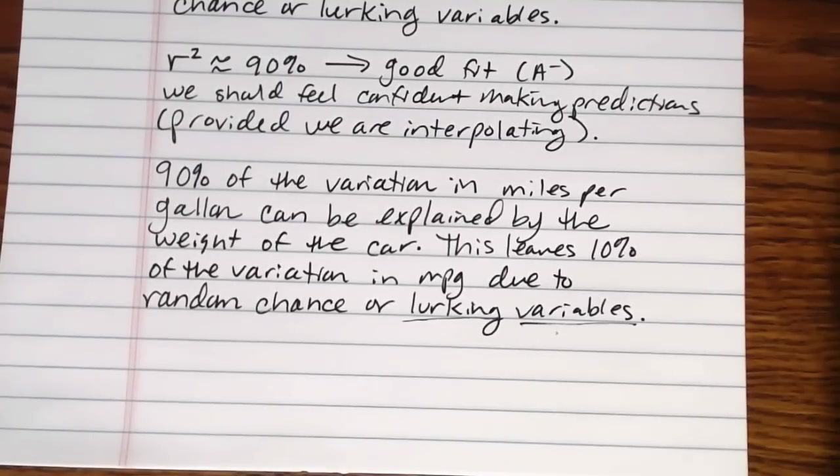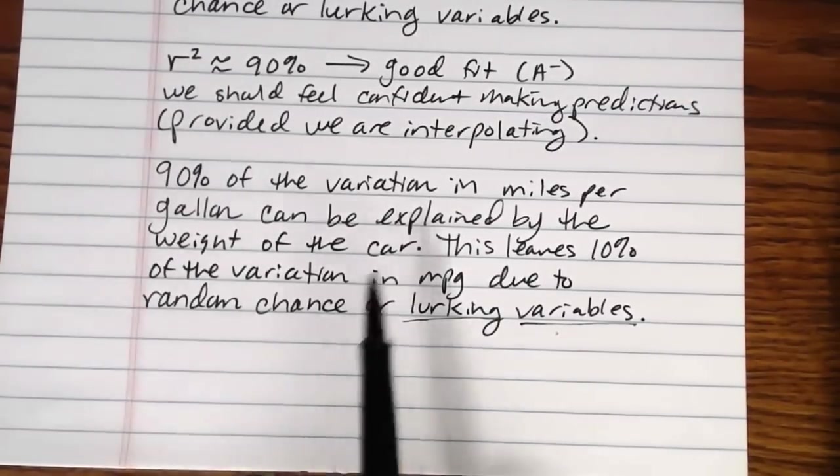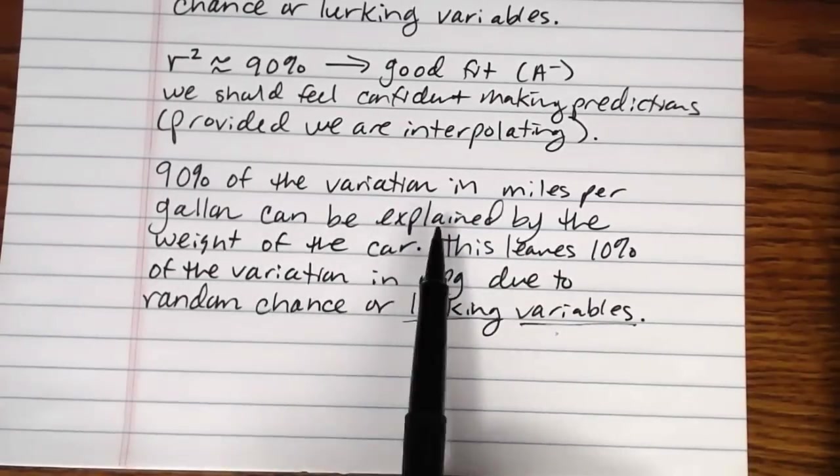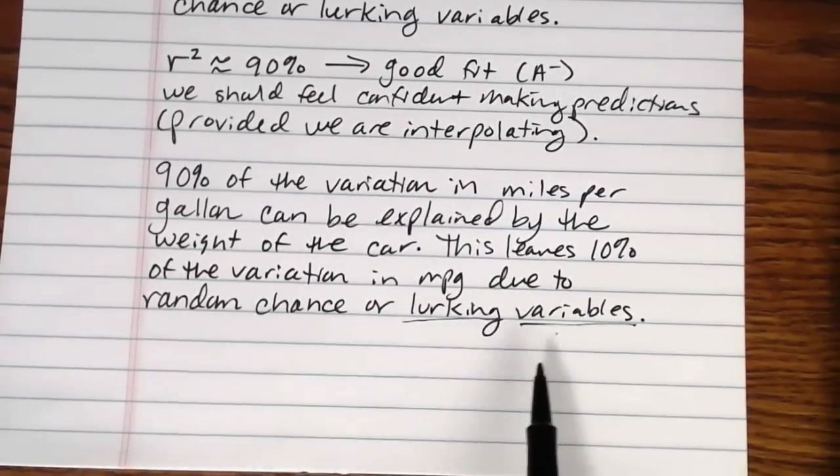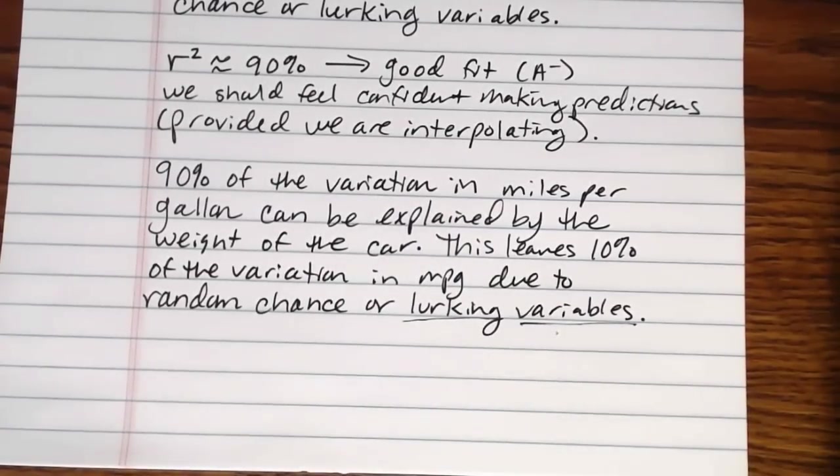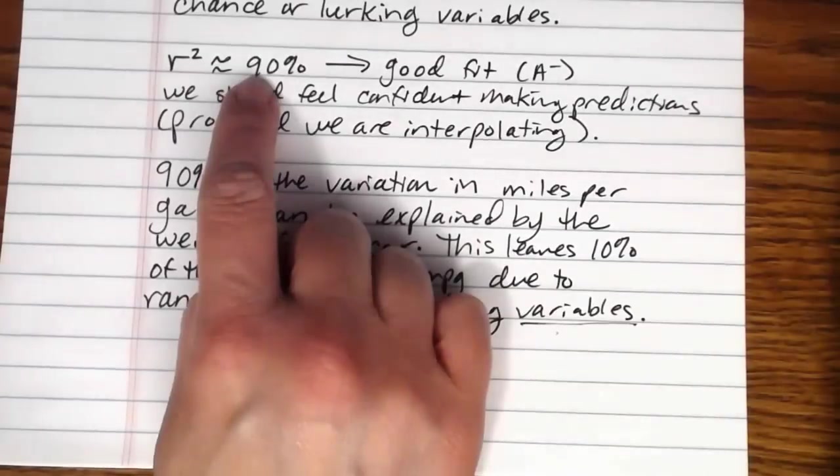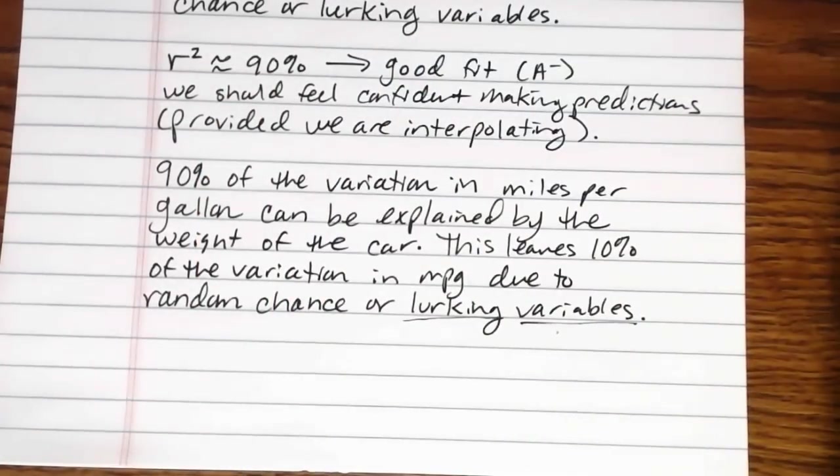And that's how the coefficient of determination r squared works. It tells us these two things. How well does the model fit? What percentage of the variation can be explained? Versus what percentage is due to chance or lurking variables. Now, if you're interested in the derivation for the formula of r squared, that's covered in the book. But really the key thing for this class, it's an intro stats class, is being able to obtain this value from the calculator and being able to interpret it correctly.